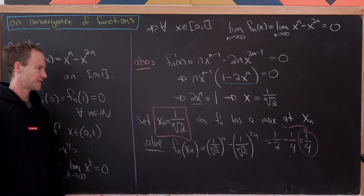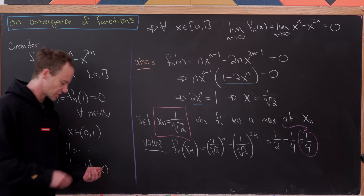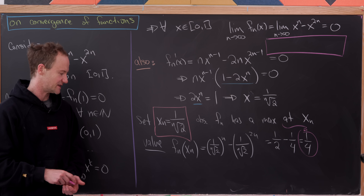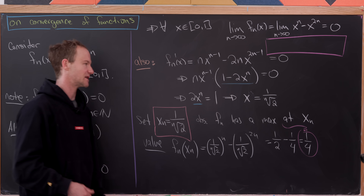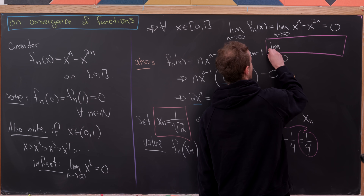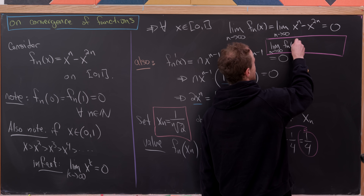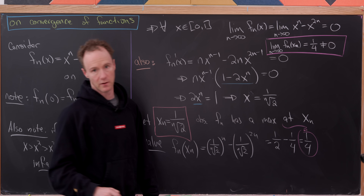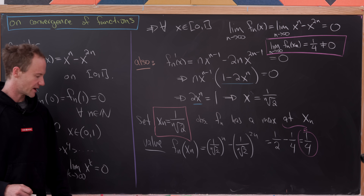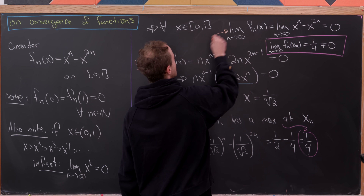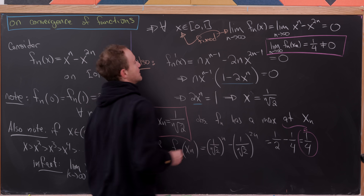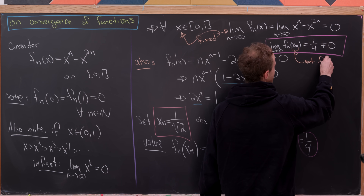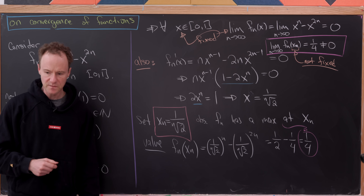This seems to contradict what we saw earlier, but here's the key weirdness: if we take the limit as n goes to infinity of f sub n evaluated at x sub n, we get 1/4, which is not equal to 0. The difference is that the earlier result used a fixed x value between 0 and 1, whereas x sub n is different for each function in the sequence.